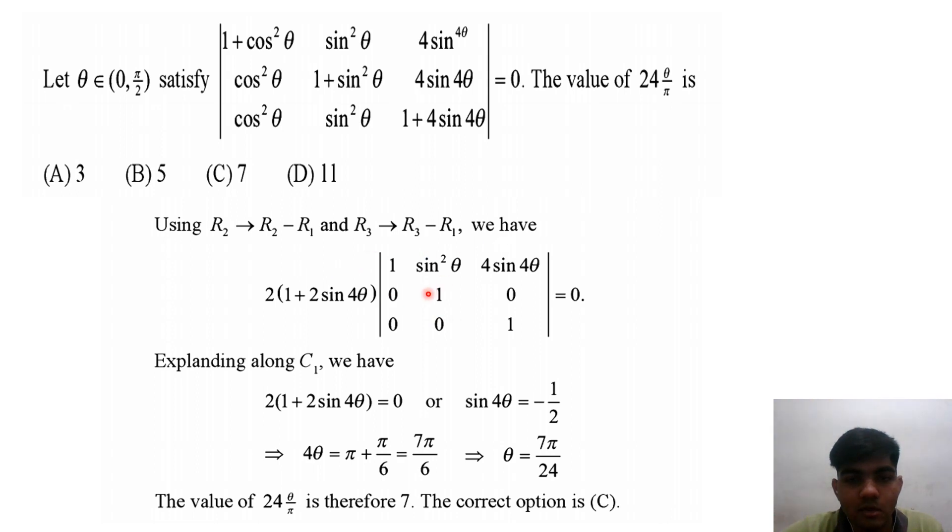Next, applying R3 minus R1: the first element becomes 0, the second is 0, and the third position gives us 1 + 4sin⁴θ.